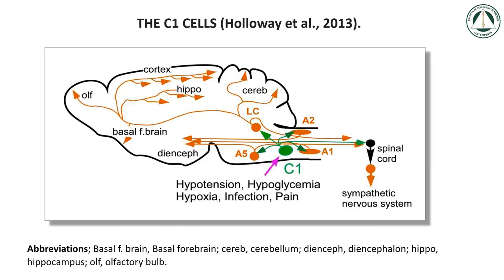According to Holloway et al. 2013, the C1 cells regulate peripheral and central nervous system noradrenaline release. C1 cells (green) directly innervate and activate sympathetic pre-ganglionic neurons (black), plus every major group of central nervous system noradrenergic neurons (orange). The C1 cells thus have the capacity to activate noradrenergic release throughout the body and the brain under conditions such as hypotension, hypoxia, etc.